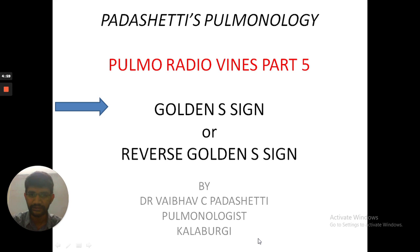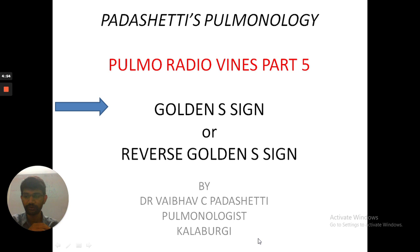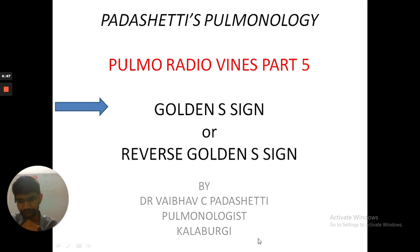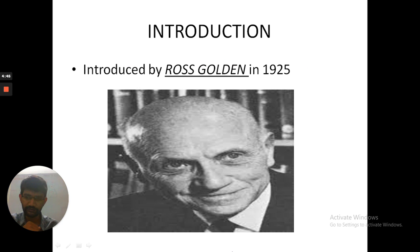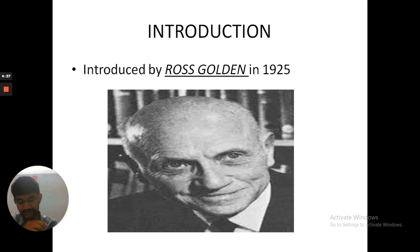Hi friends, welcome back to Prashati's Pulmonology. This is part 5 of Pulmo Radio Vines, covering a very important radiological sign — the Golden's sign, also known as the reverse Golden's sign. This sign was introduced by Ross Golden in 1925, who first attributed this sign to bronchogenic carcinoma.